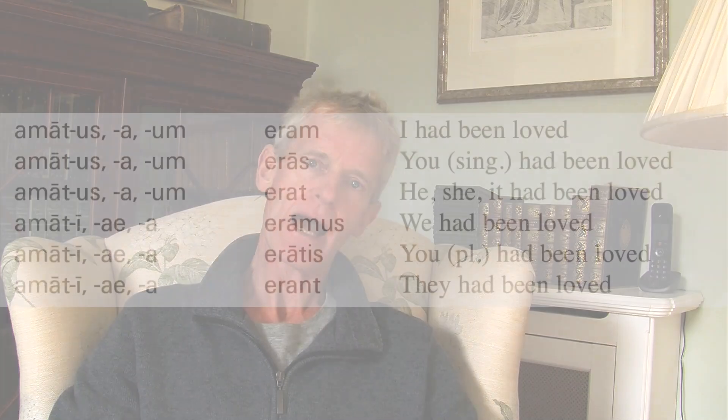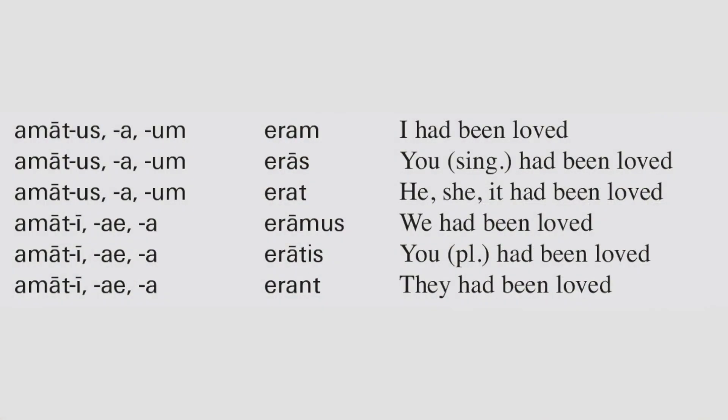So the pluperfect passive of amo, which is going to mean 'I had been loved', is going to go: amatus eram, amatus eras, amatus erat, amati eramus, amati eratis. Really, really simple stuff.